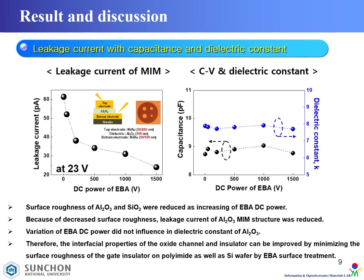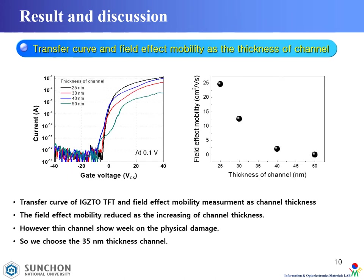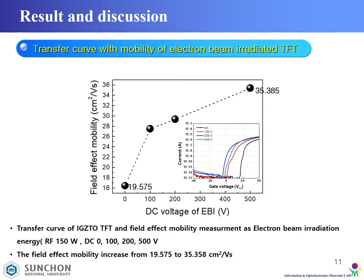However, dielectric constants and capacitance are similar across the variation of E-beam DC power. These are the electrical properties of IGZTO-based TFT as a function of channel thickness. The field effect mobility decreased as channel thickness increased. For IGZTO-based TFT as a function of E-beam energy, the field effect mobility achieved 35.358 square centimeters per volt-second.